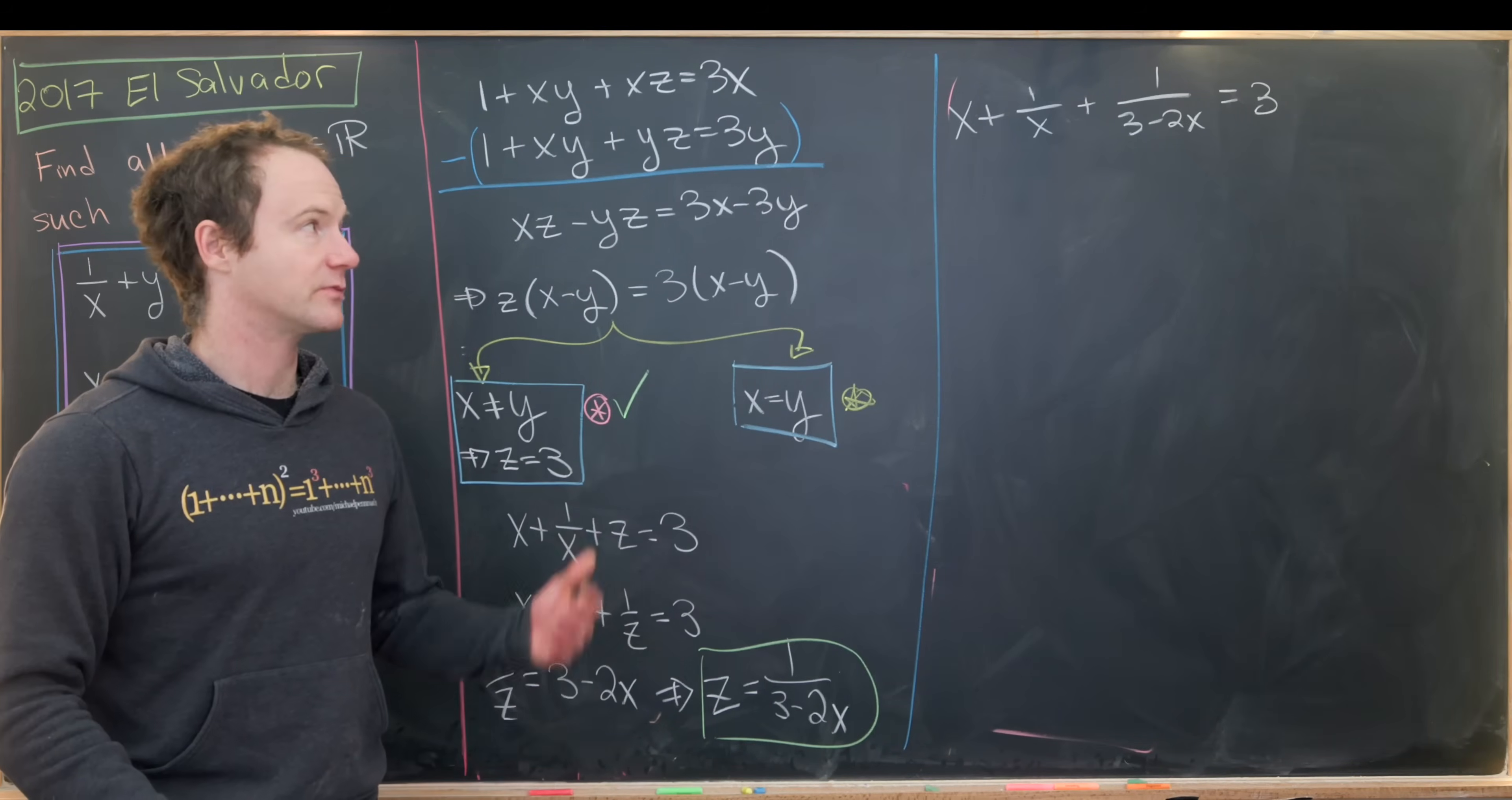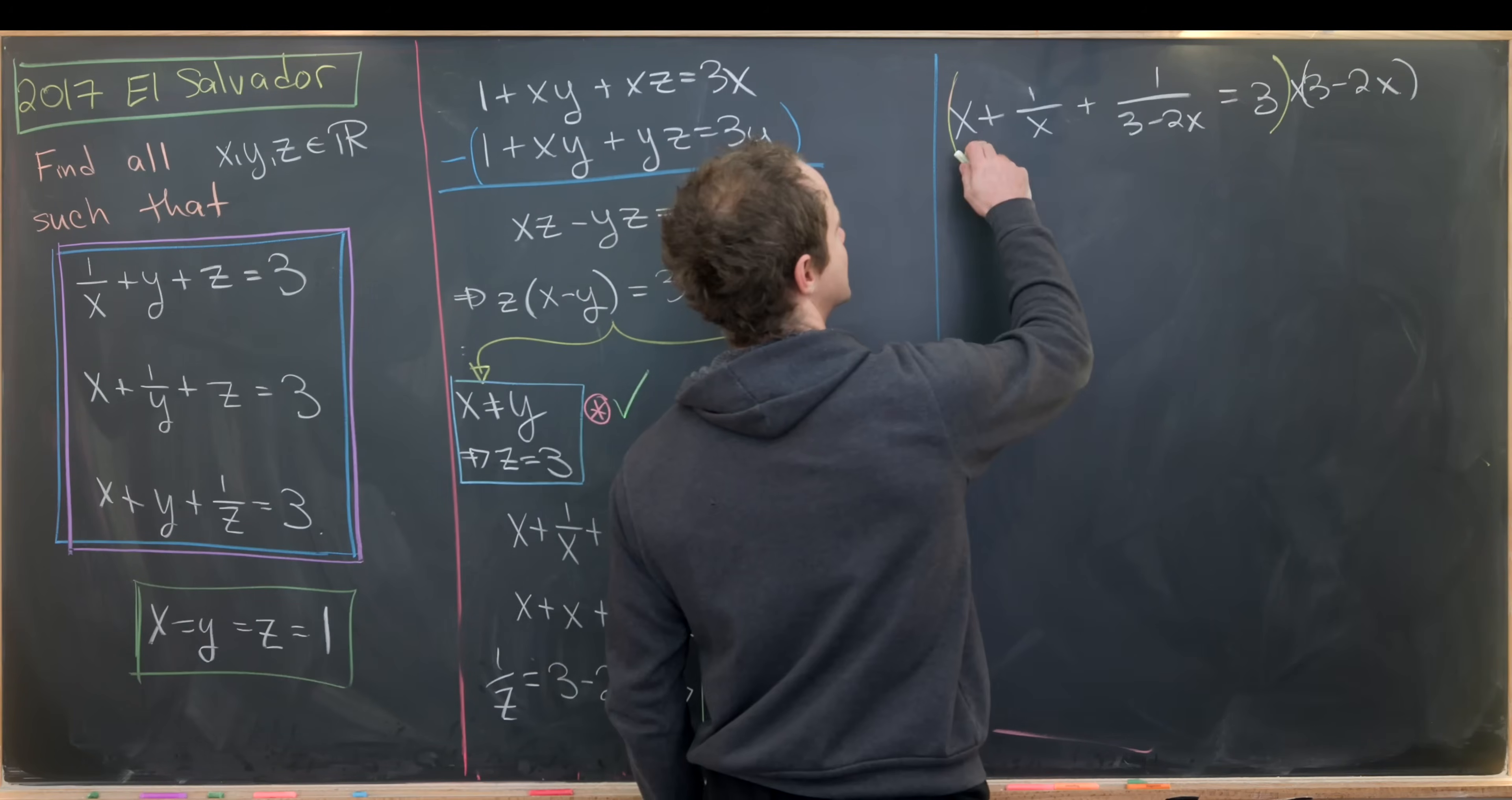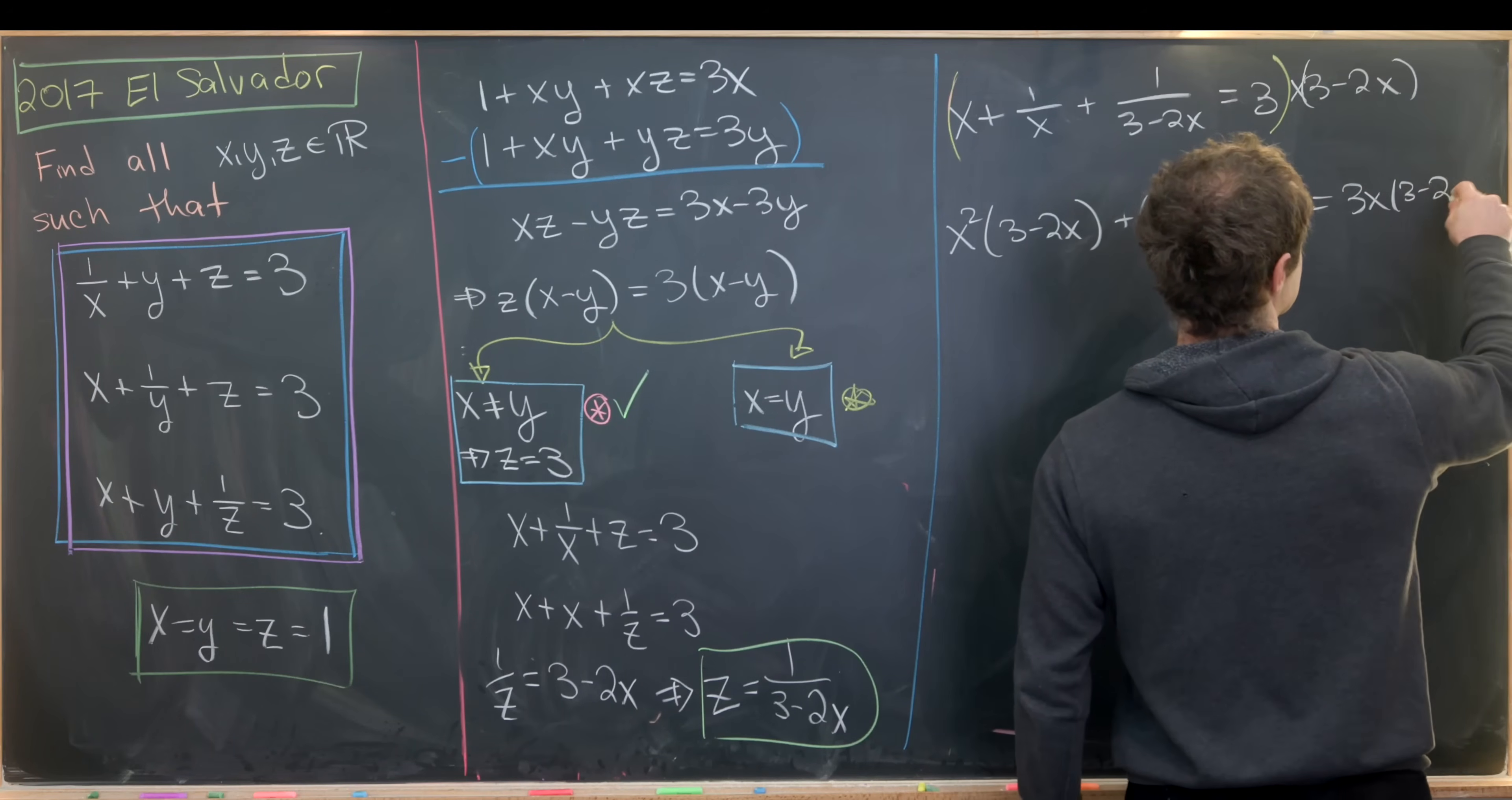We'll have x plus 1 over x plus 1 over 3 minus 2x equals 3. Now we probably want to cancel denominators, so we can do that by multiplying this entire thing by 3 minus 2x times x. That'll leave us with x squared times 3 minus 2x for this first term, and then plus 3 minus 2x for the second term, and then plus x for this third term, and then finally on the right hand side we'll have 3x times 3 minus 2x.